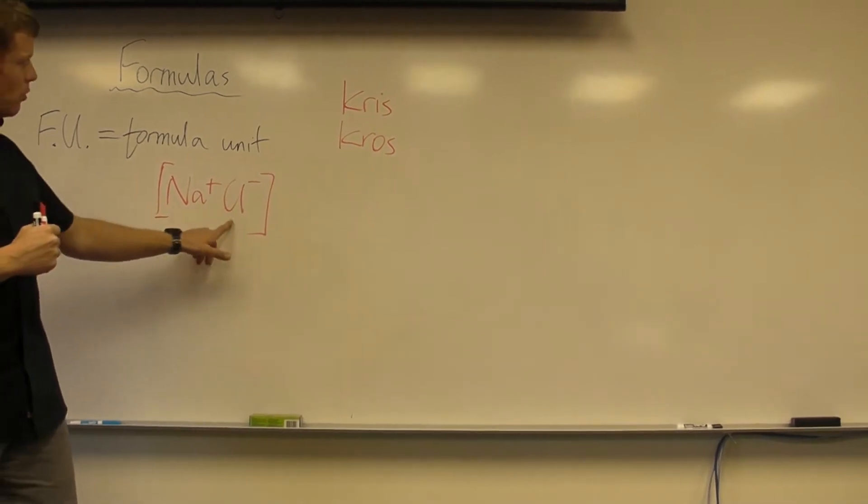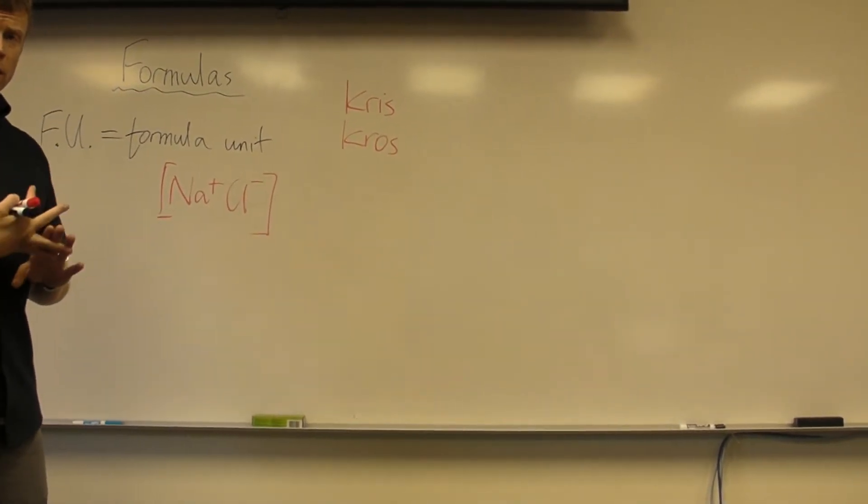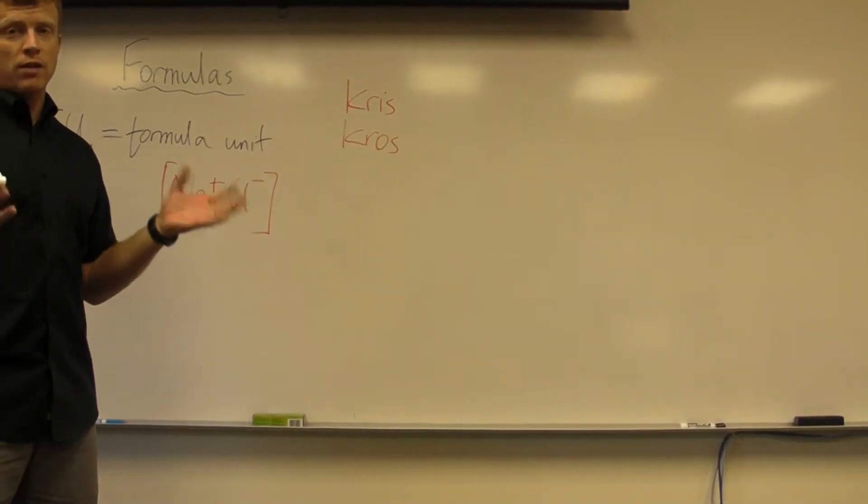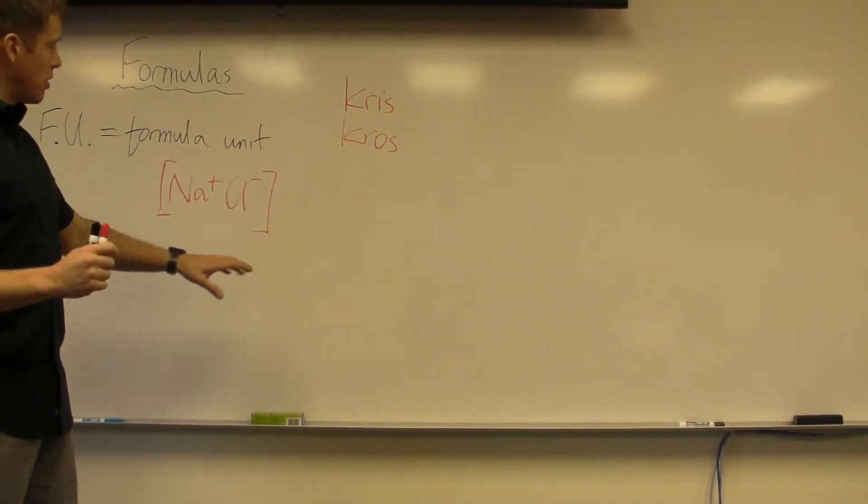So for example, sodium chloride, you've got sodium that's got a positive charge, chloride that's got a negative charge. So you just need one and one of each to write the smallest formula unit, which would be NaCl.